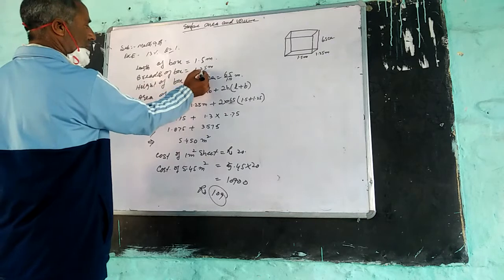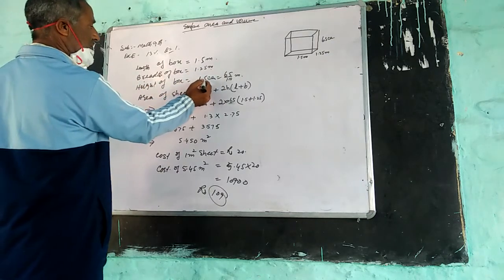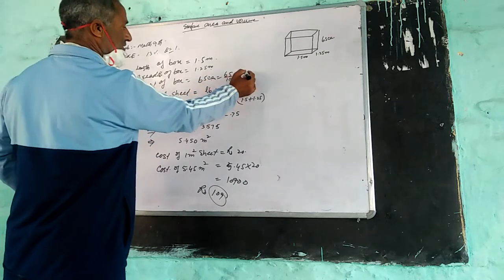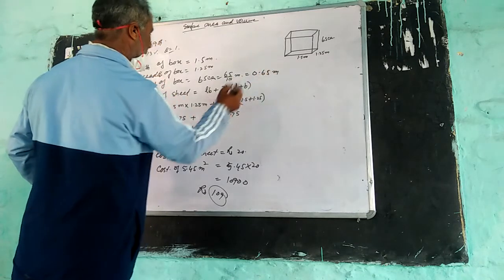Length of the box is equal to 1.5 meters, breadth of the box is equal to 1.25 meters, height of the box is equal to 65 centimeters, that is 65 by 100 meters or 0.65 meters.